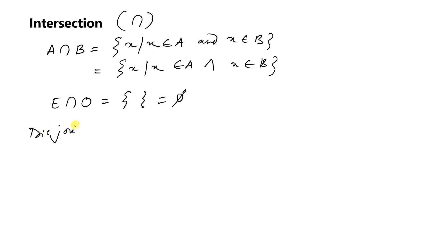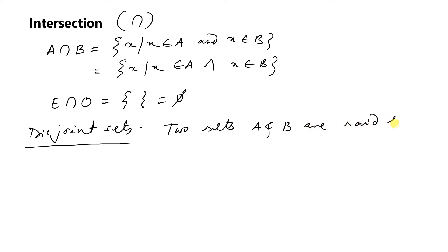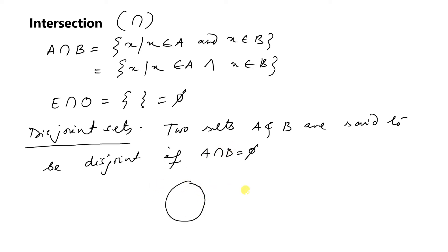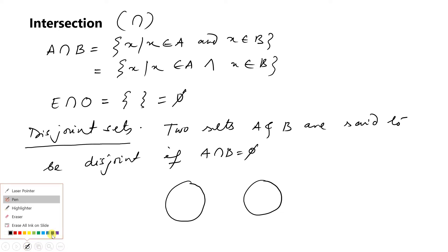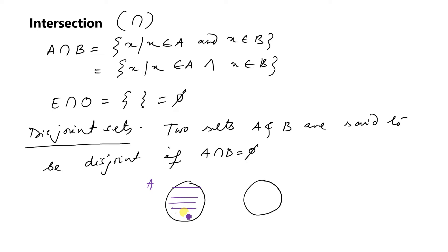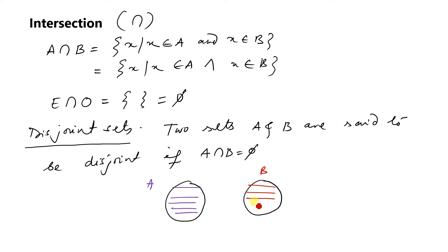Now we can define disjoint sets formally. Two sets A and B are said to be disjoint if A intersection B equals phi. In a Venn diagram, disjoint sets A and B are drawn as two separate circles with no overlap. Homework: give four examples of disjoint sets.